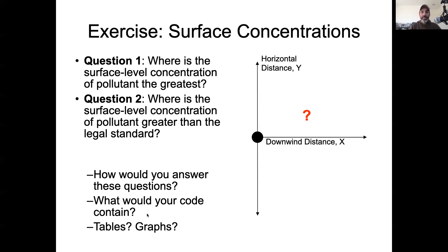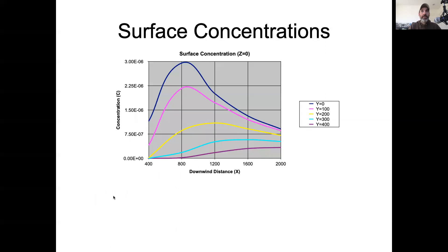In fact, as I'll bring up later, there's actually two relevant standards. One is the mean annual exposure, and then the other is the daily maximum exposure, which will both become relevant. So how would we answer this question of where the concentration is the greatest? What would your code contain? What tables or graphs would you need to draw?